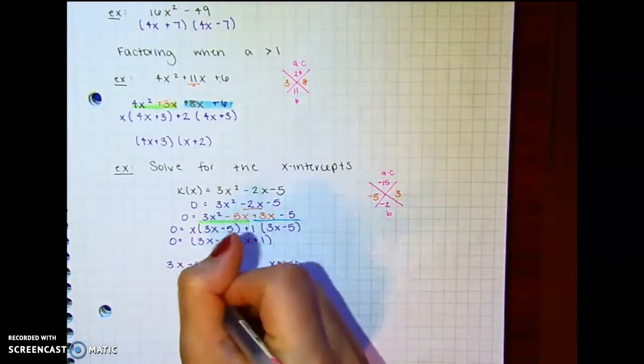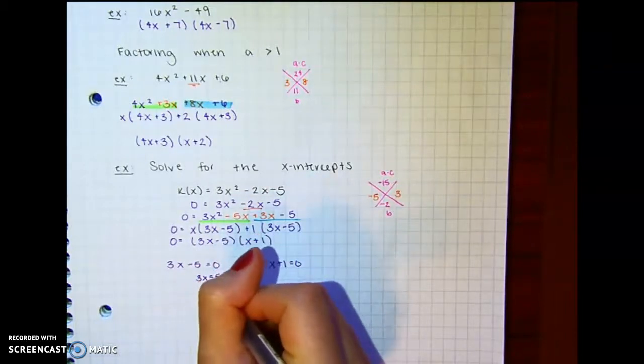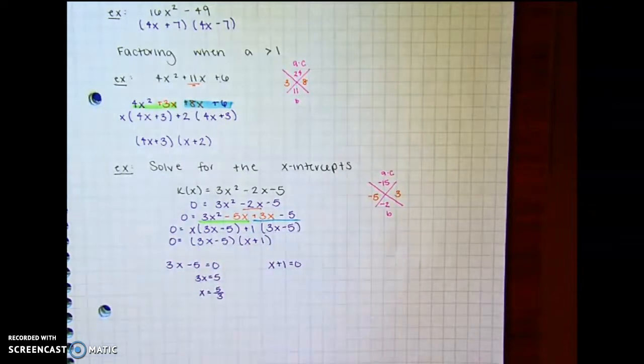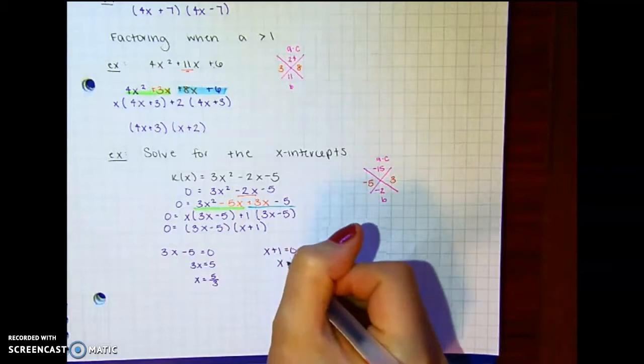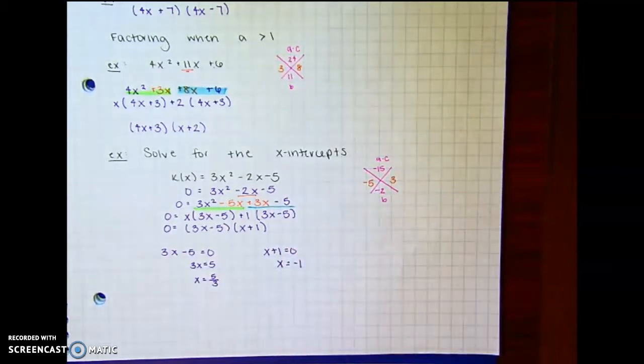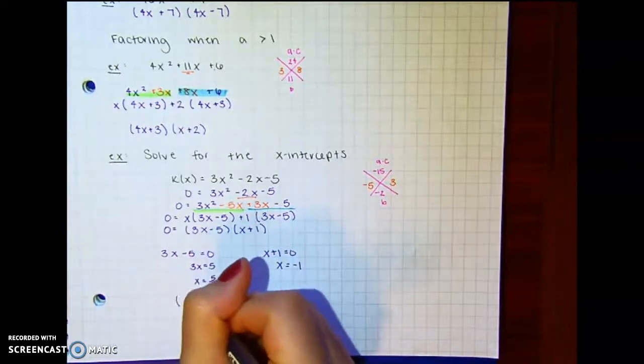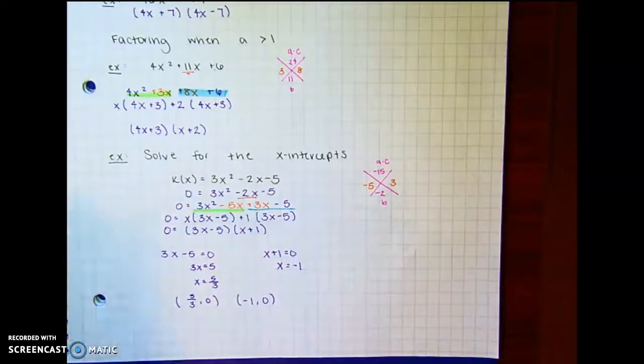You add 5. I'll even show it. And then divide by 3. So x equals 5 thirds. Please keep this as a fraction, especially when it's divisible by 3 because that's not a nice number. But I asked for x intercepts, so I need to rewrite this as a coordinate point. So it'll be 5 thirds comma 0 and negative 1 comma 0.